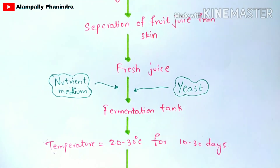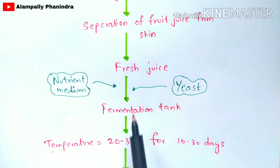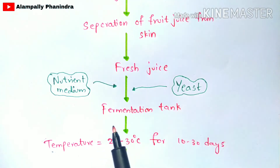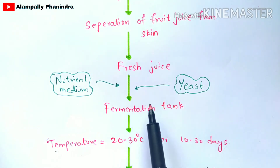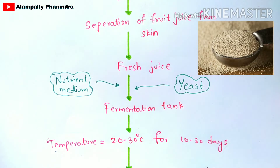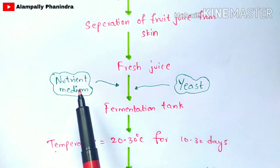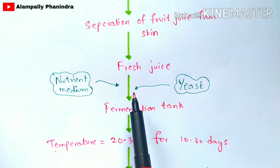After separating the skin, fresh juice is obtained. The fermentation tank is first cleaned with water, and then the fresh juice is added into it. Along with the fresh juice, yeast is also added into the fermentation tank. A nutrient medium is also added, and oxygen is supplied through an inlet, which plays a major and vital role in converting primary metabolites into secondary metabolites.